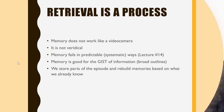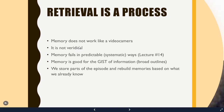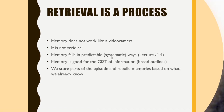A couple of general points before we get started: memory does not work like a video camera. It's not veridical — it's not always truthful — meaning that memory fails in some predictable, or systematic, ways. We're going to talk a lot about that in lecture 14, where we discuss distortions of memory and what kinds of things cause it to fail in predictable ways.